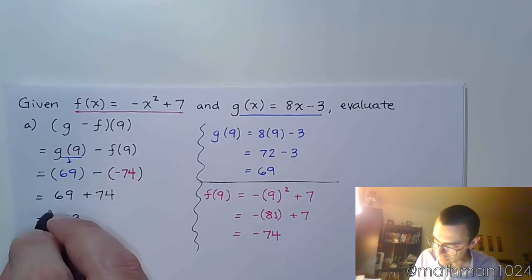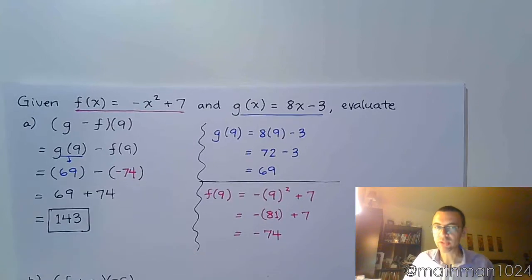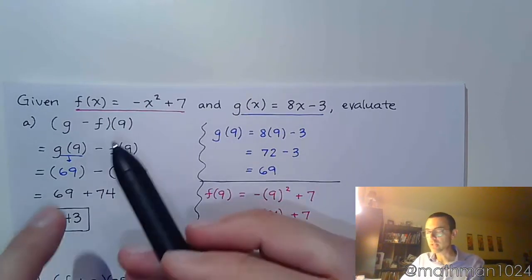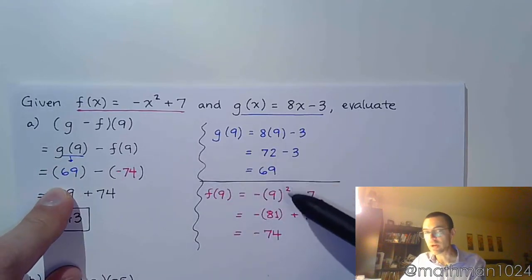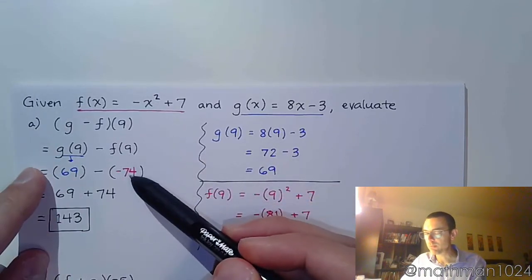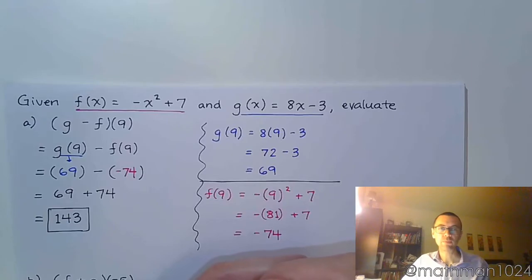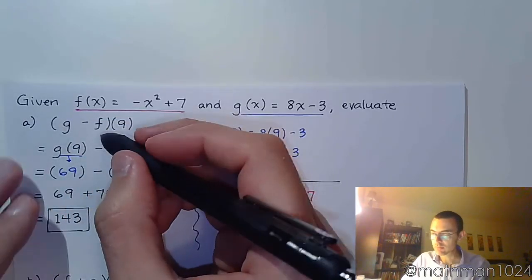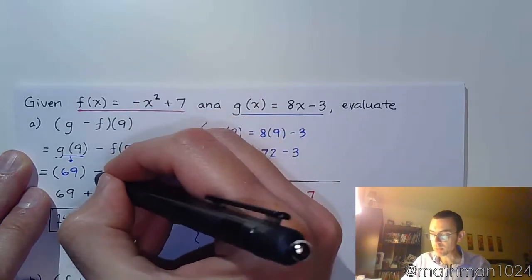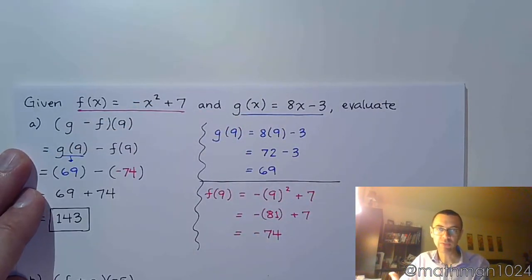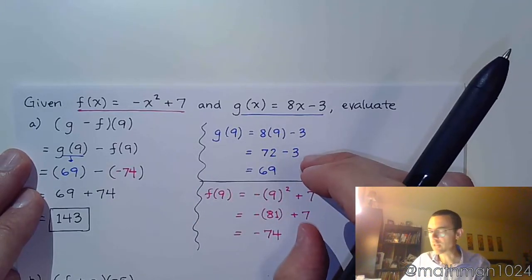And then we combine these guys together, and we get 143. And that's our answer. I hope that you can see that there's nothing more than just understanding that we're doing subtraction here. We evaluate these guys individually off to the side, bring these back in here, and we do the math. If this had said plus, the math over here would have been the same, except we would have had a plus here and a plus there, and you would have had 69 plus negative 74. Gives you a different answer, but the work over here to the side is still going to be the same.